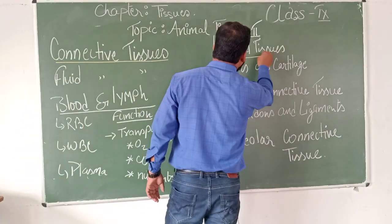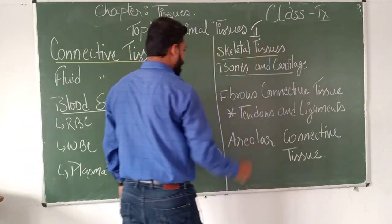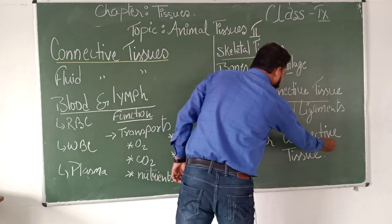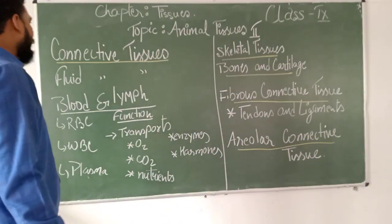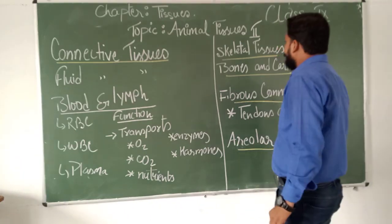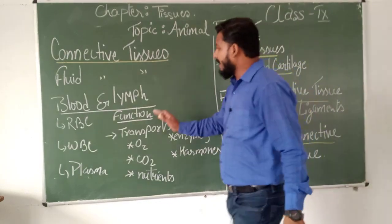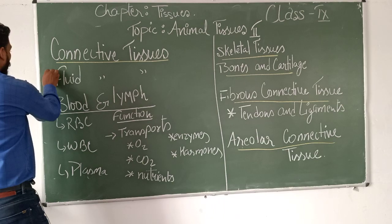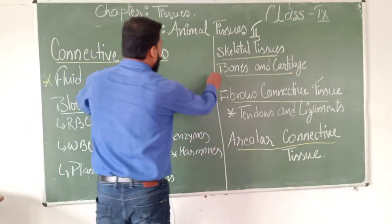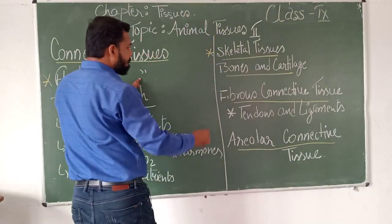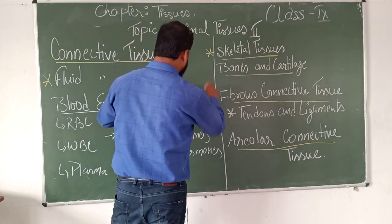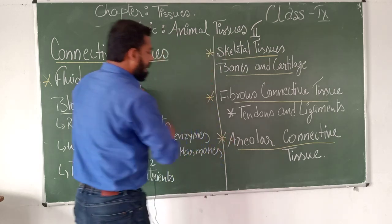Now talking about connective tissue. Connective tissues include: skeletal connective tissue covering bones and cartilage, fibrous connective tissue, and areolar connective tissue. Within connective tissue we have four types: number one is fluid connective tissue, number two is skeletal connective tissue, number three is fibrous connective tissue, and the last is areolar connective tissue.